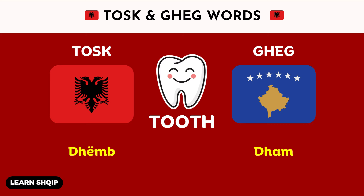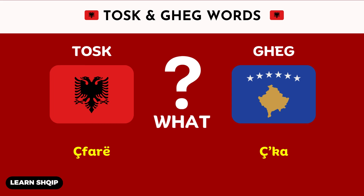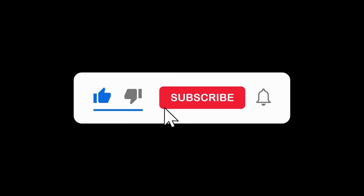Then we have the word tooth. In Tosk you say Thumb, and in Geg it also changes to Thumb. Then for winter, in the Tosk dialect you say Dimer, and in Geg you say Demon. The last word is what — in Tosk you will say Far, and in Geg you will say Ska. This was today's lesson, I hope you enjoyed, see you in the next one.